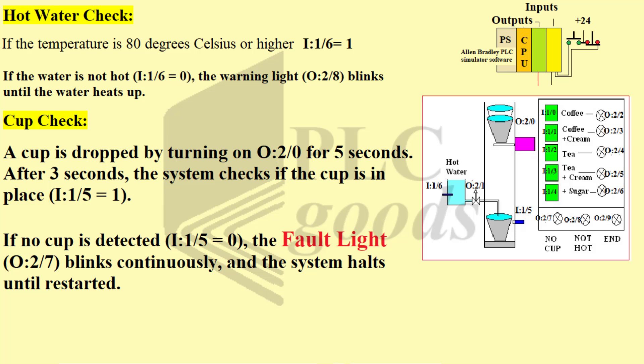Hot water check: if the temperature is greater than or equal to 80 degrees Celsius, I6 is set to 1. If the water is not hot, I6 is set to 0. The warning light O8 blinks until the water heats up.